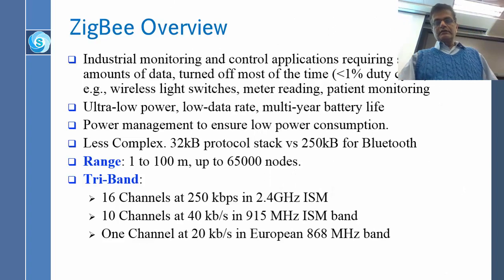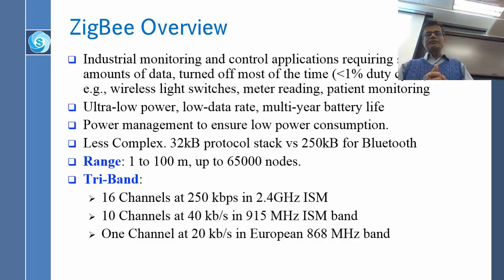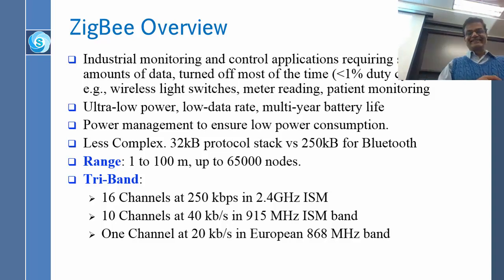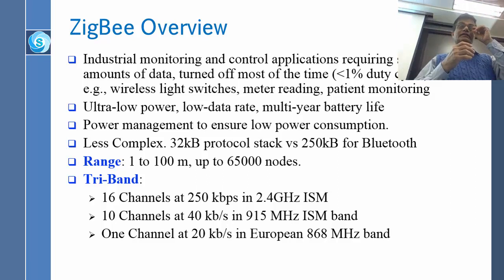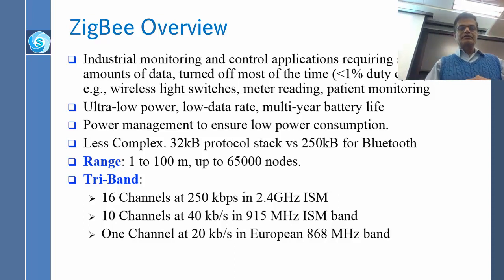Zigbee is for machine-to-machine communication, home automation, IoT protocols, industrial monitoring, wireless switches, meter reading, and patient monitoring. When you get any remote wireless device, you do not know — it might be using Zigbee. Industrial monitoring and control applications require small amounts of data, are turned off most of the time, and need ultra low power, low data rate, and multi-year battery life.